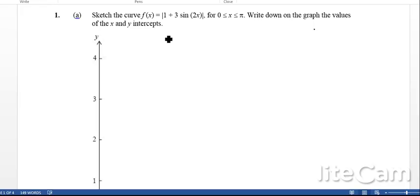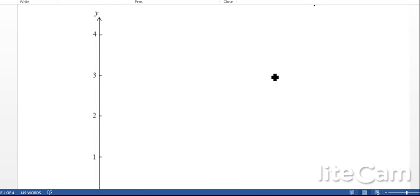Okay, so the next question we're going to look at is some sketching of graphs. Here we go, sketch the curve f(x) = |1 + 3sin(2x)| for 0 ≤ x ≤ π, and it's given us the graph here.